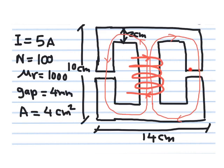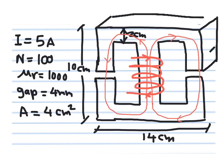Now we consider another example with a different type of magnetic core. It has two air gaps — one here and one here — with the magnetic core making up the rest. The dimensions are: width 12–14 cm, another dimension 10 cm, core thickness 2 cm. There are N = 100 turns, current I = 5 amperes, permeability of the steel core μᵣ = 1000, air gap length = 4 mm, and cross-sectional area = 4 cm².